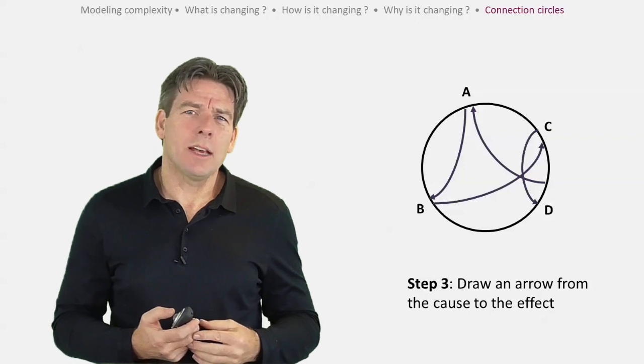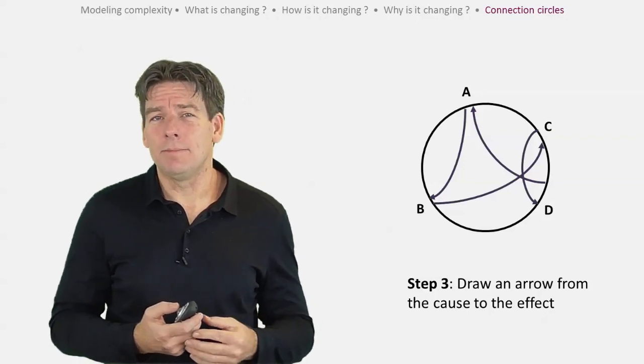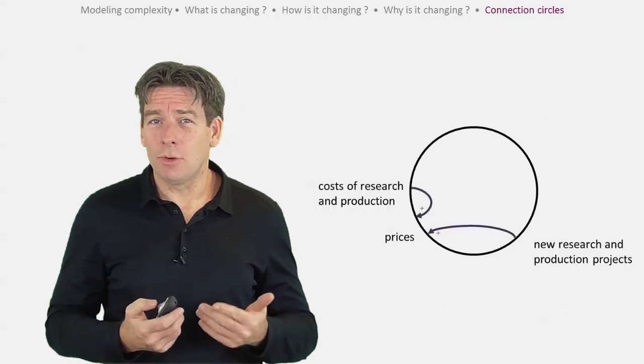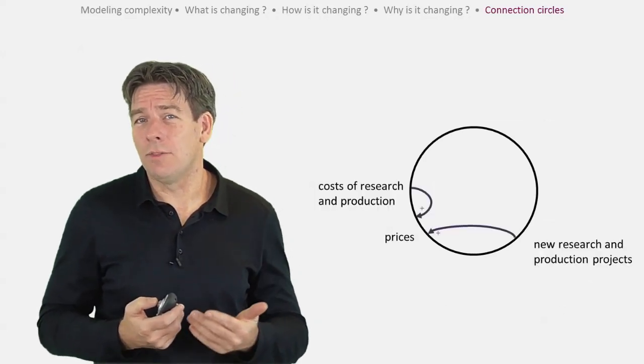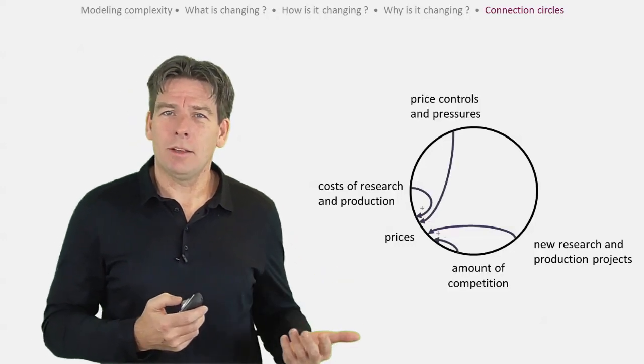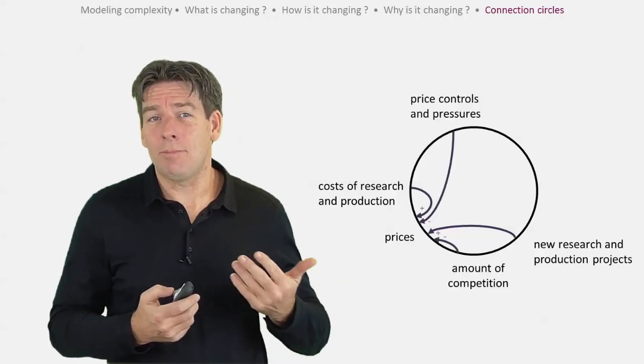We can now use our connection circle to help us tell the systemic story. Let's go. Prices allow drug companies to recoup the research and development costs of the drug and also fund new projects. Competitive regulatory pressures can maintain price increases.